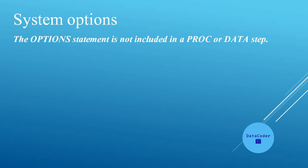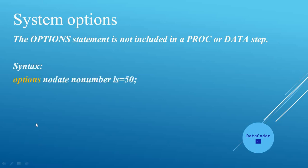Next is SAS system options. By using system options we can also customize our report output. The options statement is not part of a proc or data step — it is a standalone statement and can be written anywhere in the program, though it's best to place it at the beginning. The syntax is simply: options followed by the option names. We will cover some key options here and learn more when studying the report procedure in upcoming videos.